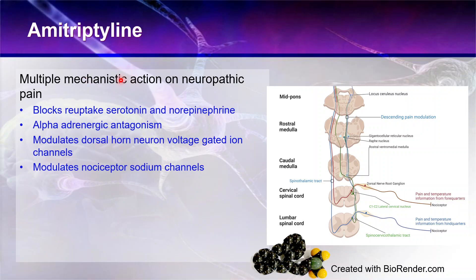Amitriptyline is effective for neuropathic pain much more so than fluoxetine, and it's because of its other actions — not just that very specific serotonin action — which makes fluoxetine less effective for neuropathic pain disorders. So it blocks reuptake of serotonin and norepinephrine, which are inhibitory mechanisms of pain. These are produced in the brainstem nuclei and then affect the dorsal horn via descending inhibition.